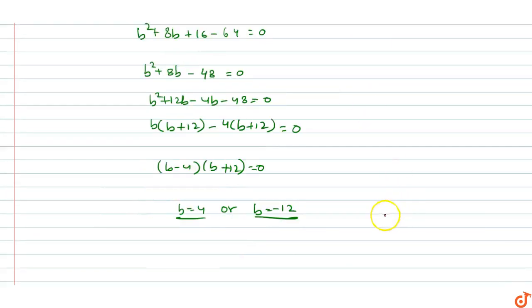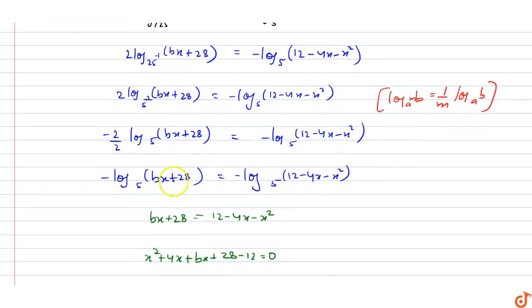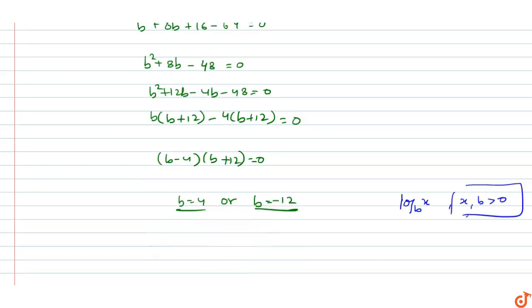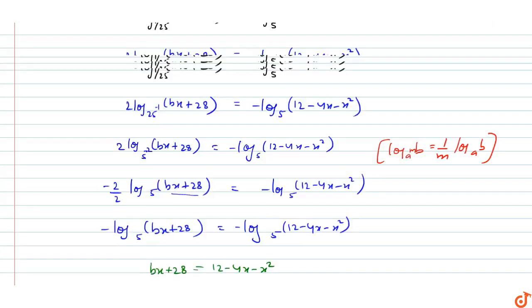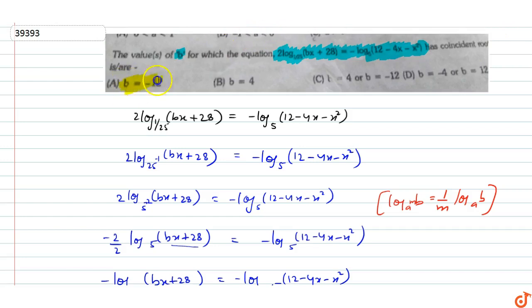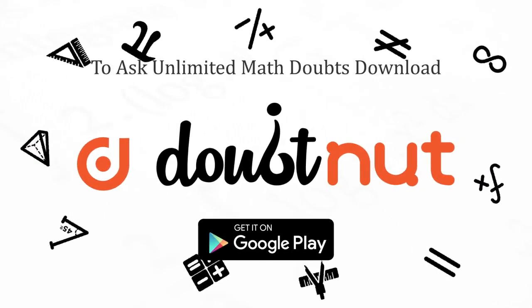For logarithms, we need the arguments to be greater than 0. Checking domain constraints for Bx + 28 > 0 and 12 minus 4x minus x squared > 0, both values B = 4 and B = minus 12 are valid. Therefore, the answers are B equals 4 or B equals minus 12.